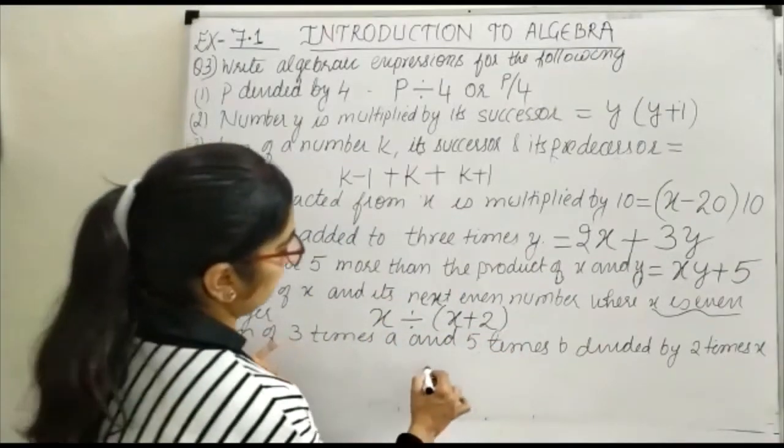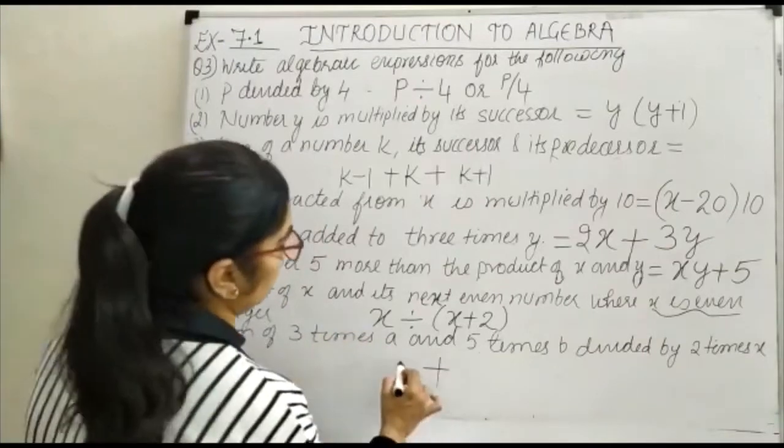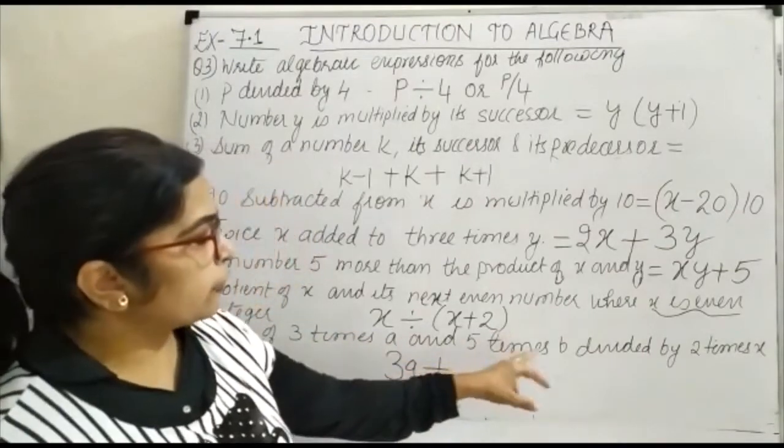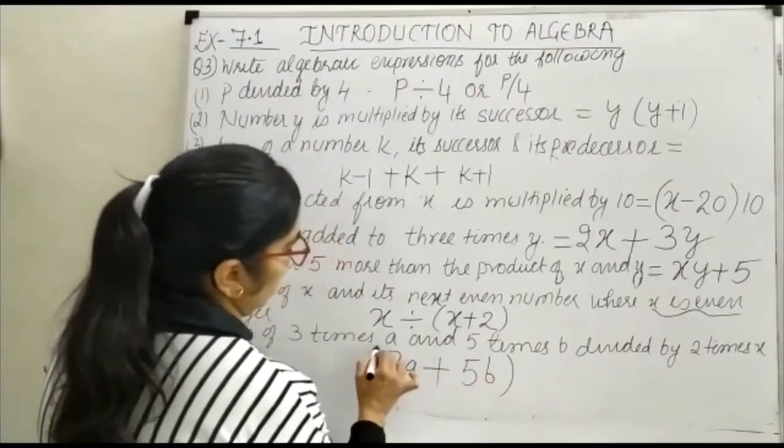Then sum of 3 times a and 5 times b. First write the sum: 3 times a means 3a, and 5 times b is 5b. Put this in brackets.